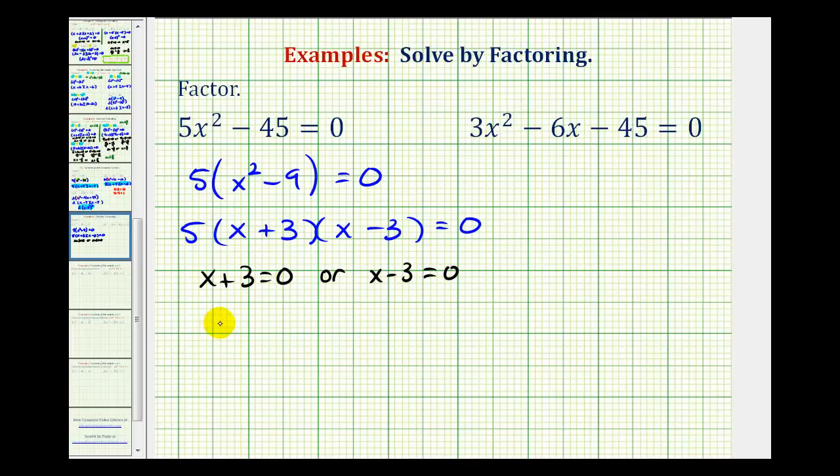Here we subtract 3 on both sides to get x = -3, or add 3 to both sides to get x = 3. This can be written as x = ±3.